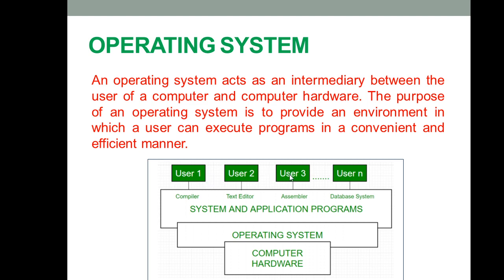For example, if there are a number of students in one computer lab, there are different students who want to use different computer systems. For different users to interact with the computer systems in the lab, you need one operating system — only then can you interact with that computer system. With the help of the operating system, which acts as an interface, all kinds of users will interact with the computer system. In terms of system software, we have different types: a compiler is one kind of system software, and an assembler is another kind of system software.